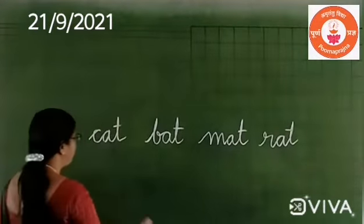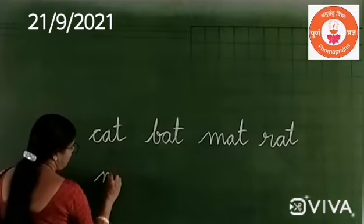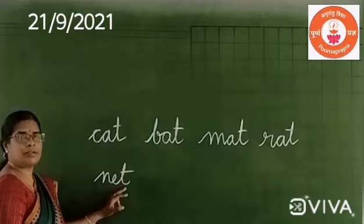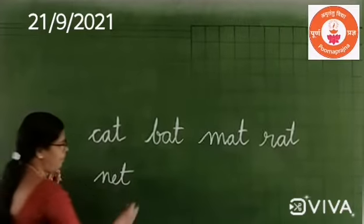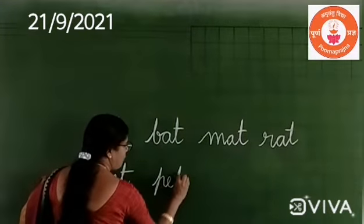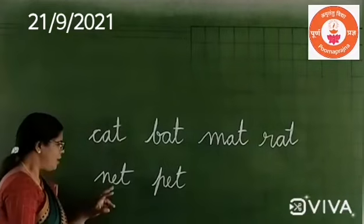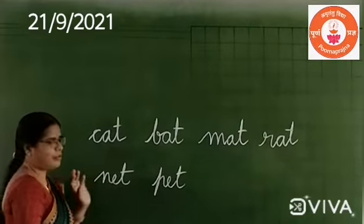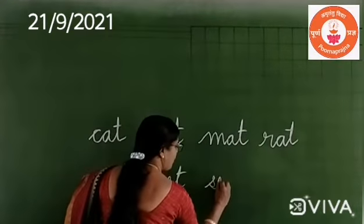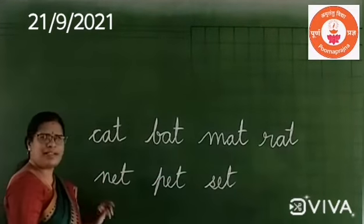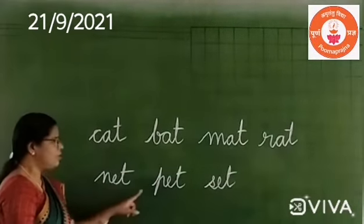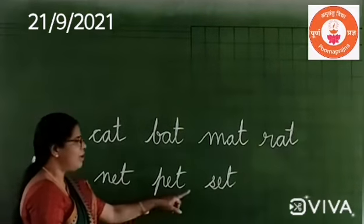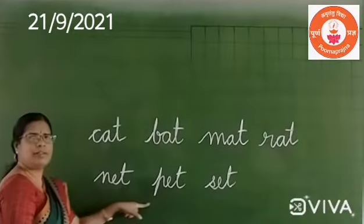Write one more. Net. The ending sound is 'et'. Back. Net, back, set. Et, et, et. The ending sound is the same.